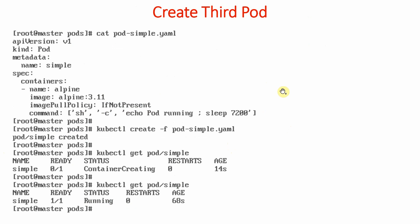Now we will create a third pod. We are creating a simple pod with a YAML file specifying API version v1, kind pod, metadata name 'simple', using the Alpine image at a particular version, with image pull policy 'IfNotPresent'. We also run the sleep command so that the container stays in running state. Then we run 'kubectl create -f' and the pod named 'simple' is created.